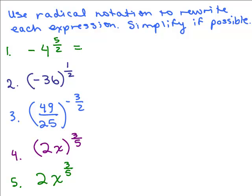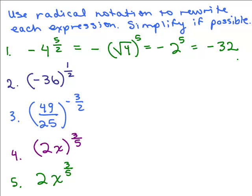Let's do this first one: negative 4 to the 5 halves. The minus sign does not have anything to do with this exponent — it's out in front, and the base is 4. So I want the square root of 4 to the 5th power. The square root of 4 is 2, so we have 2 to the 5th. Just remember the minus sign is not being raised to the 5th power. 2 to the 5th is 32, so my answer is negative 32.